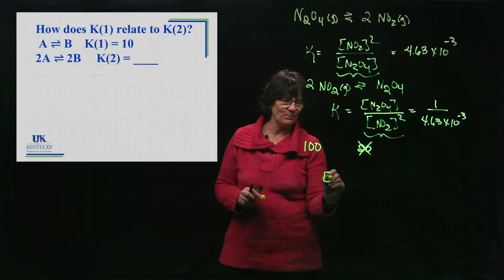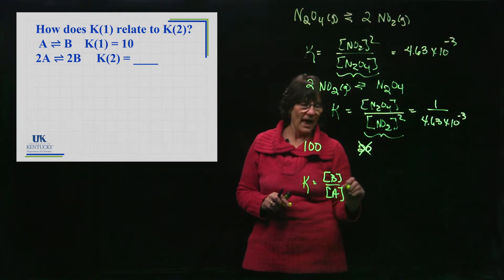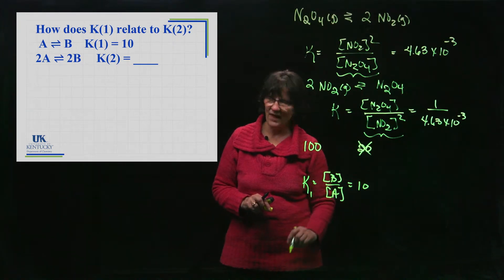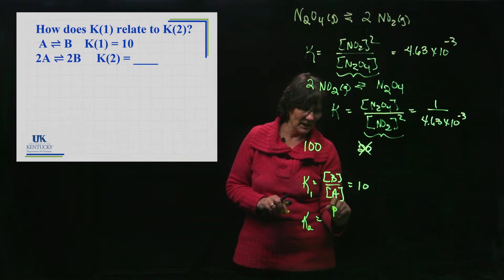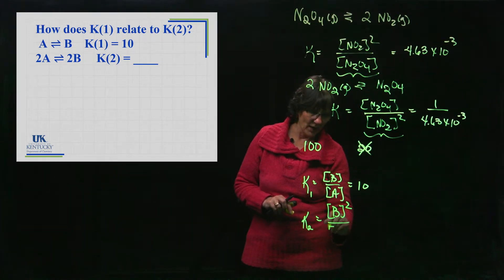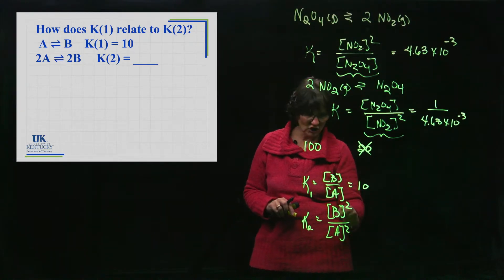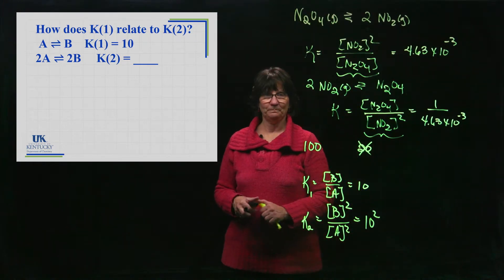For the first reaction, it's B over A. That's what the equilibrium constant for that reaction equals, and it was established to be 10. But for the second reaction, it is B squared over A squared. So if you take this guy and square it, you get this guy. So you take 10 and square it, and you'll have the value for this one.